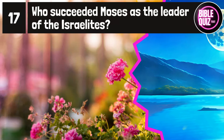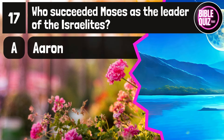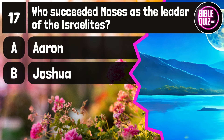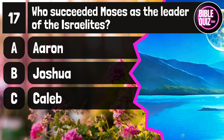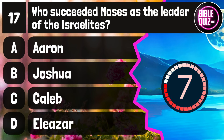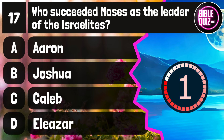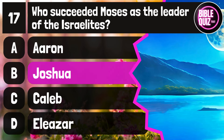Question number 17. Who succeeded Moses as the leader of the Israelites? Option A: Aaron. Option B: Joshua. Option C: Caleb. Option D: Eleazar. Time to think. The answer is option B: Joshua.